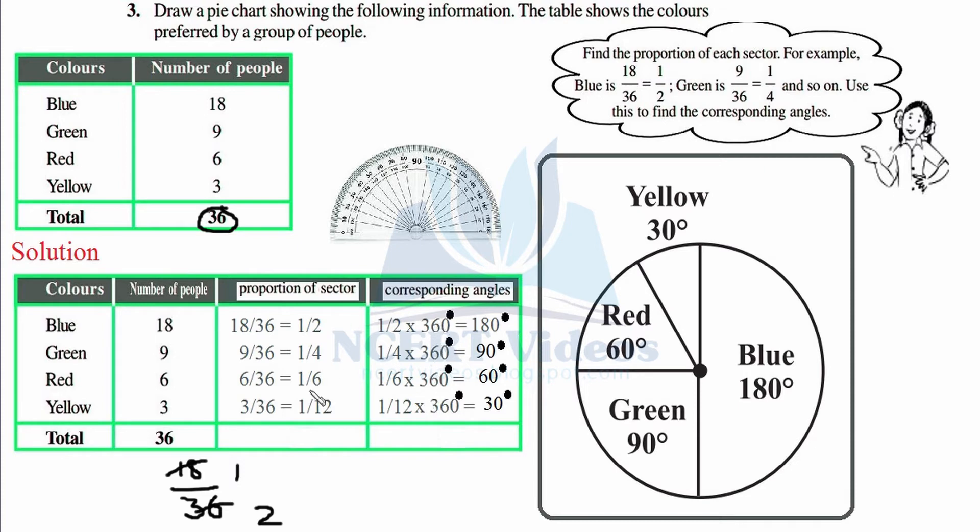This 1 over 2 that we found as our ratio for blue - we need to find its corresponding sector angle. This 1 over 2 is of what? 360 degrees of central angle because we are going to represent it in terms of a pie chart. Half of 360 is 180 degrees, so the same has been written.